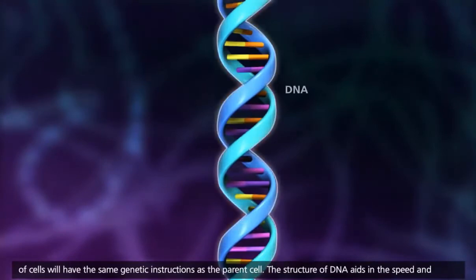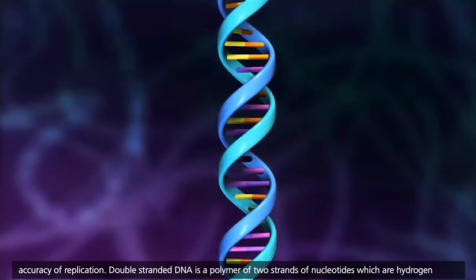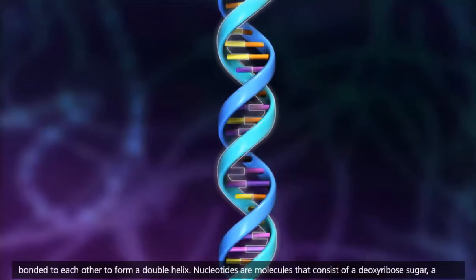The structure of DNA aids in the speed and accuracy of replication. Double-stranded DNA is a polymer of two strands of nucleotides, which are hydrogen bonded to each other to form a double helix.